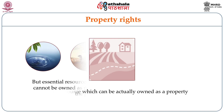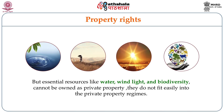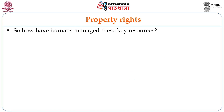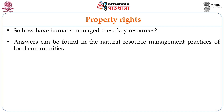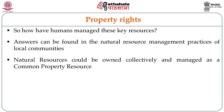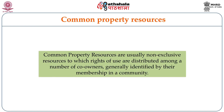Land is a resource which can be easily owned. But other natural resources like wind, air, sunlight, forest and biodiversity do not easily fit into the idea of property. They cannot be owned like land. So how have humans used these natural resources? Answers can be found in the natural resource management practices of local communities. These natural resources were owned collectively and treated as common property resources.